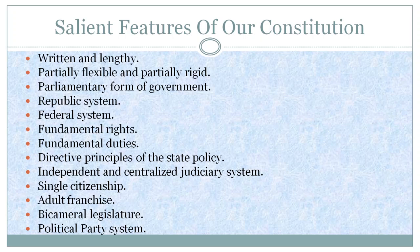Federal system: Our constitution provides for a federal system of government because our country consists of different languages, castes, races, and geographical regions. Administrative powers are shared by the central and the state governments. The Supreme Court possesses powers to solve all the disputes arising between the center and the state with respect to any subject.